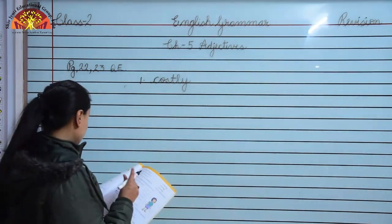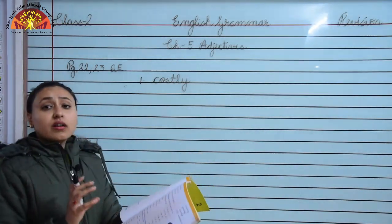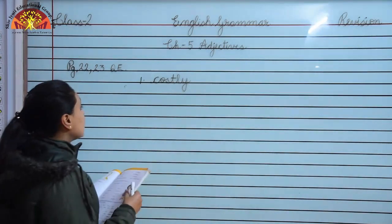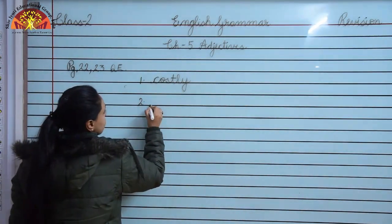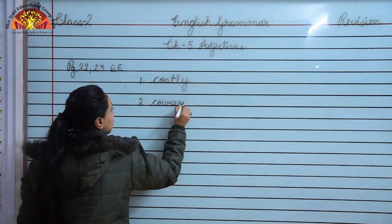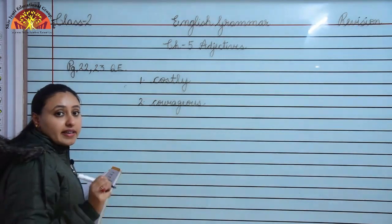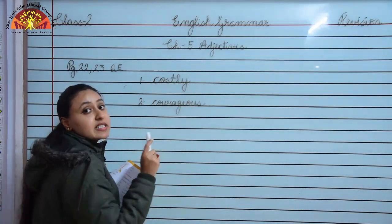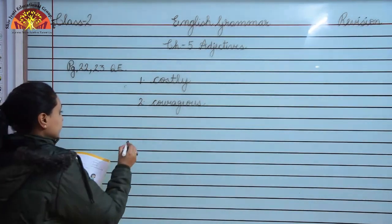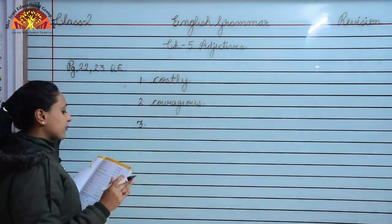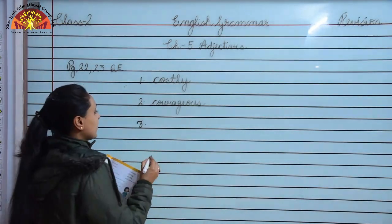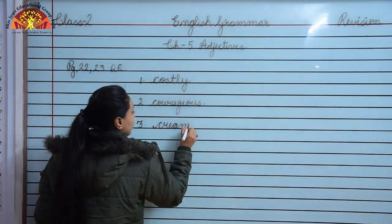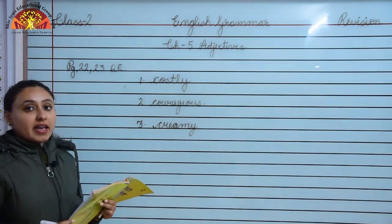Number 2: someone who shows a lot of courage - we call it courageous - C-O-U-R-A-G-E-O-U-S. Number 3: a cake full of cream - we call it creamy - C-R-E-A-M-Y. Number 4: a person full of greed - we call it greedy - G-R-E-E-D-Y.